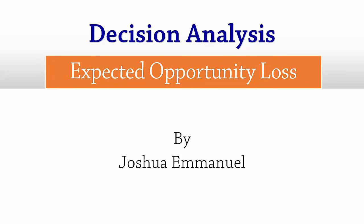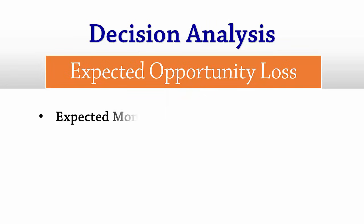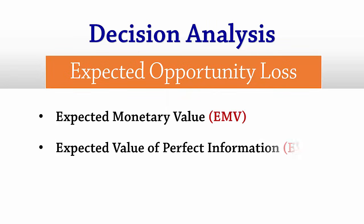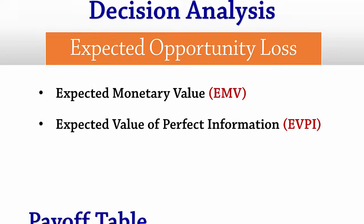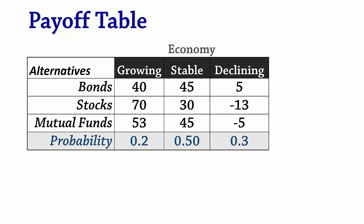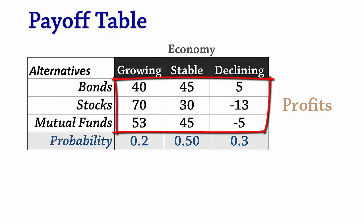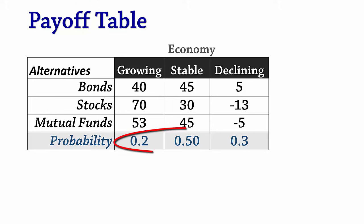Welcome. In this tutorial, we make decisions using the expected opportunity loss approach and also describe its relationship with the expected monetary value and with the expected value of perfect information. We will be using this payoff table where payoffs are profits and the probabilities of the states of nature are 0.2, 0.5, and 0.3 respectively.